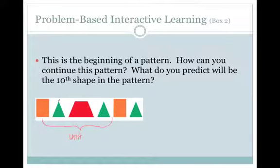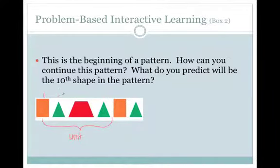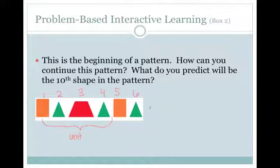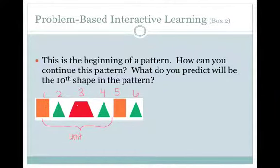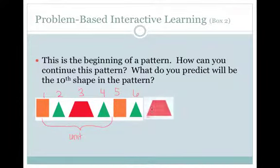I'm going to number my shapes above so I know how many I need to find: one, two, three, four, five, six. Now I am on the seventh, and it follows the green triangle that follows the orange rectangle. I look to my unit — green triangle follows the orange rectangle, and it's a red trapezoid. So the next shape is a red trapezoid, and I'm going to label that seven.